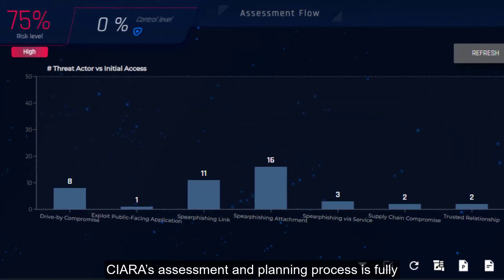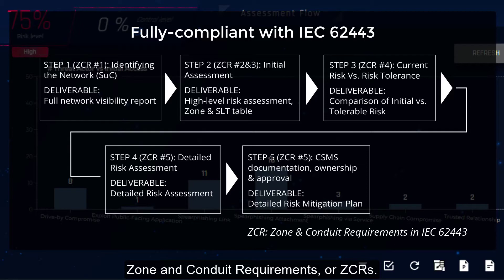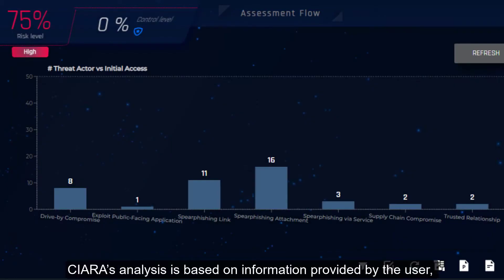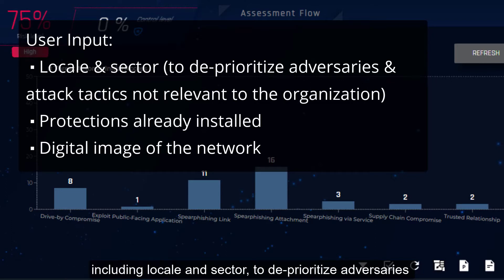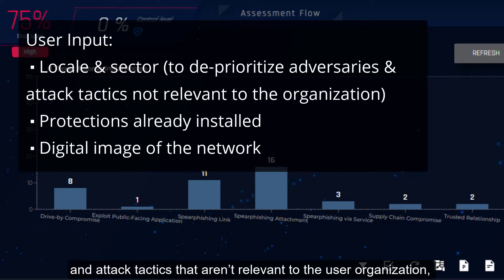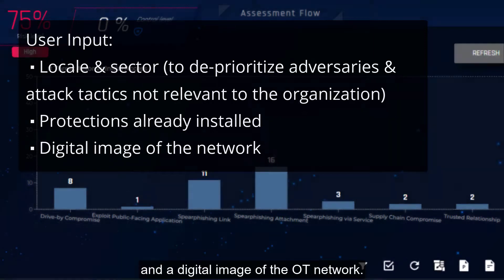Kiara's assessment and planning process is fully IEC 62443 compliant, following the standard's use of zone and conduit requirements, or ZCRs. Kiara's analysis is based on information provided by the user, including locale and sector, to deprioritize adversaries and attack tactics that aren't relevant to the user organization, as well as which protections are already installed on the network and a digital image of the OT network.